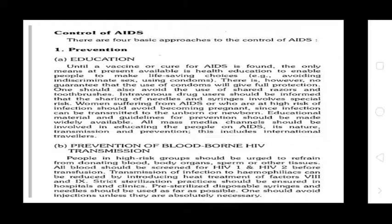Control of AIDS — Health Prevention and Education: Until a vaccine or cure for AIDS is found, the only means of prevention currently available is health education to enable people to make life-saving choices, such as practicing safe sex and using condoms, though condoms do not guarantee full protection. 2. Prevention of blood-borne HIV transmission: People at high risk should be urged to refrain from donating blood, body organs, or other tissues. 3. All blood should be screened for HIV-1 and HIV-2 before transfusion. Transfusion-associated infection in hemophiliacs can be reduced by heat-treating clotting factors. Strict sterilization practices should be enforced in hospitals and clinics, and pre-sterilized disposable syringes and needles should be used.